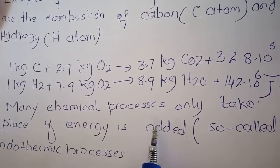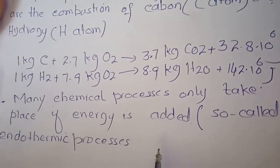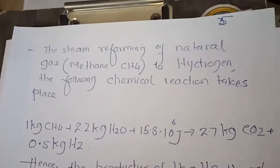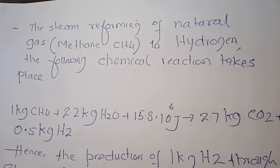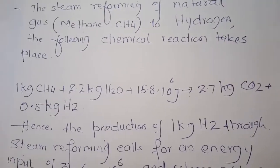Many chemical processes only take place if energy is added, which is called the endothermic process. For example, in the steam reforming of natural gas, methane to hydrogen, the following chemical reaction takes place.